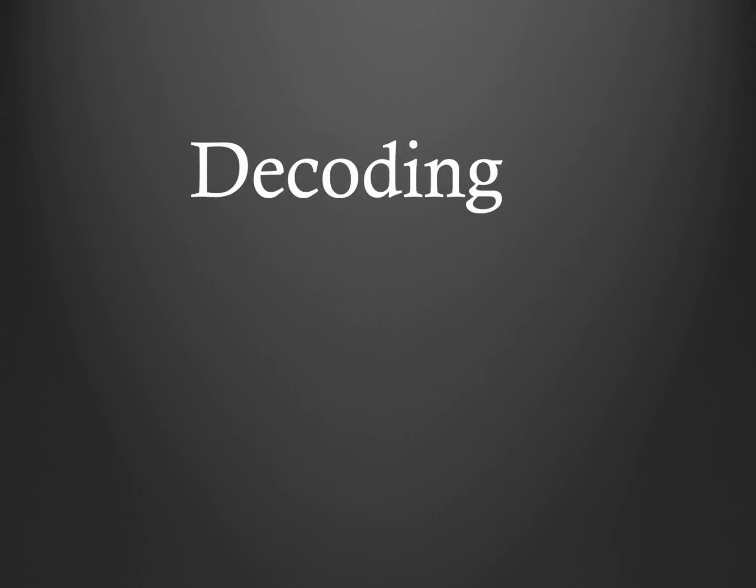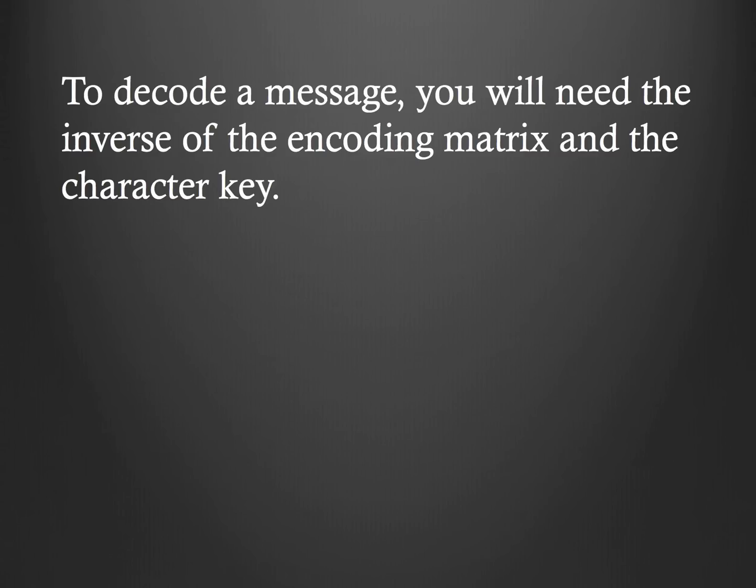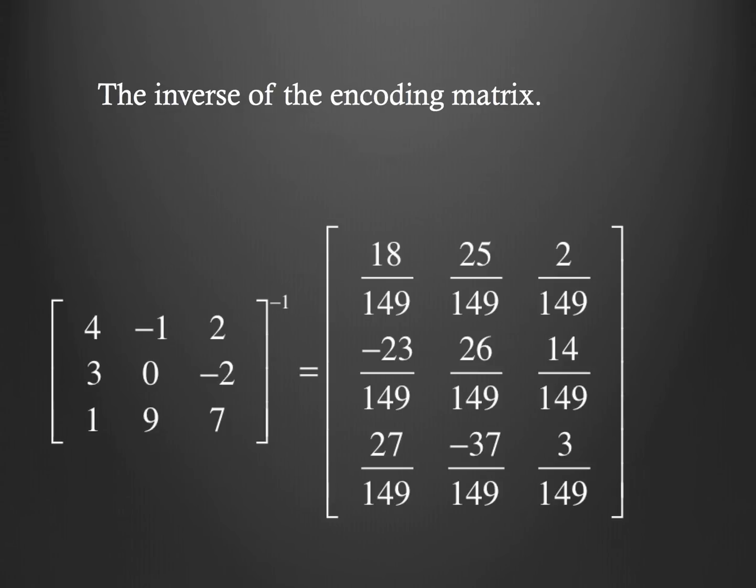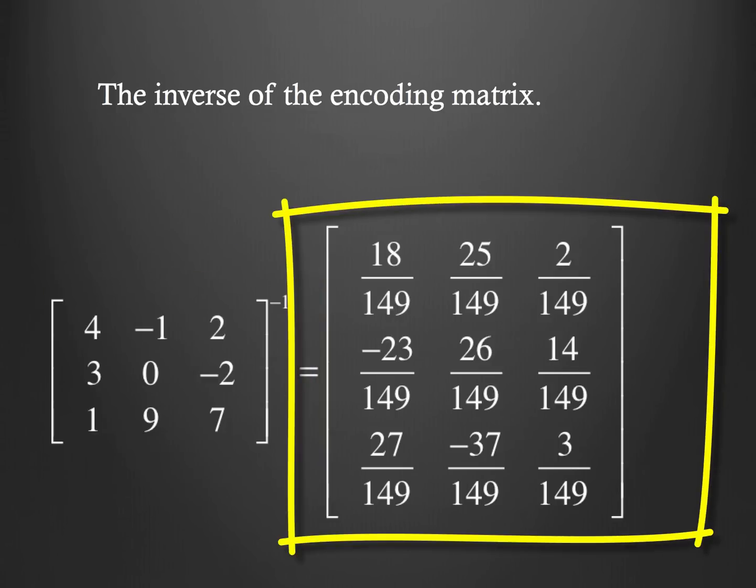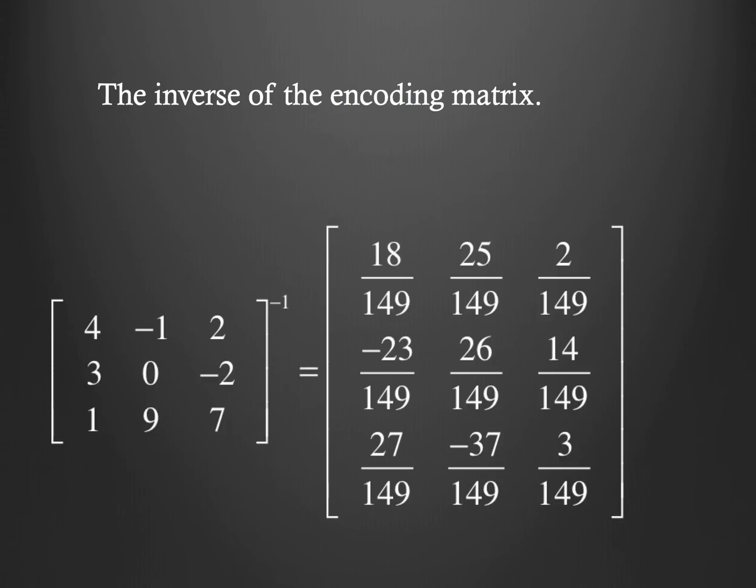Now, when it comes to decoding, decoding can be a real pain, and this is where the two things are that you need in order to do this using matrices. You're going to need the inverse of the encoding matrix, and the character key. So, first, let's go to our encoding matrix. Now, our encoding matrix was the 4, negative 1, 2, 3, 0, negative 2, 1, 9, 7. So, we've got to find the inverse of that, and then, man, look at that ugliness right there. 18 over 149, 25 over 149, blah, blah, blah. So, that's the gross thing that is going to be the inverse of our encoding matrix. So, we're going to need that here in a little bit.